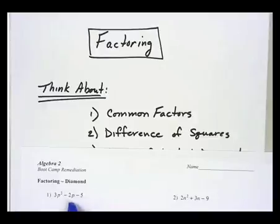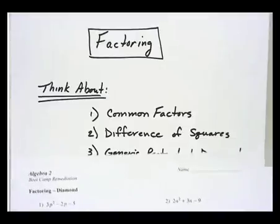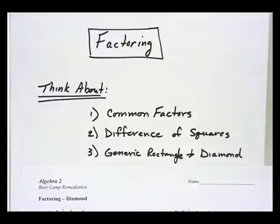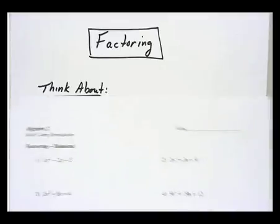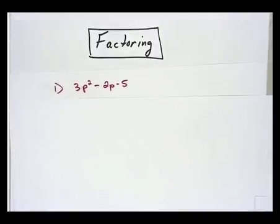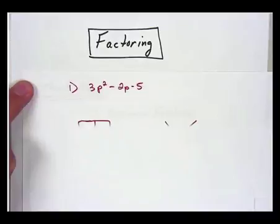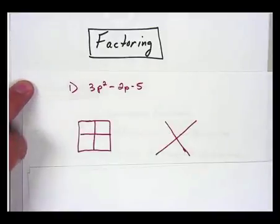Since the first one here does not have common factors, we'll move down the list. It's not a difference of squares. We'll talk more about that in just a minute. And since it is a generic rectangle and diamond problem, let's look at how we do that. Now let's look at how we accomplish the question that says 3p squared minus 2p minus 5. Since it is a diamond problem, we're going to make a box and a diamond.